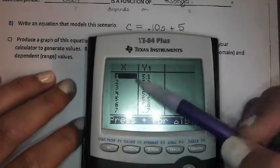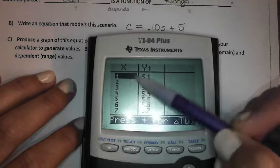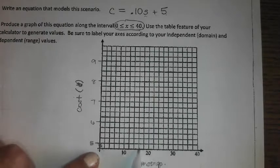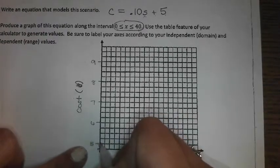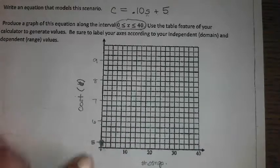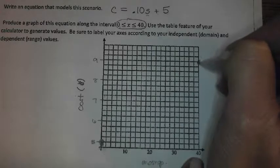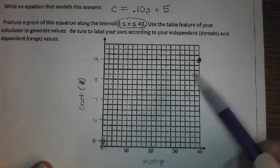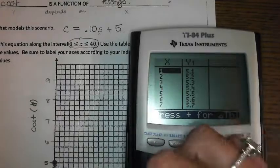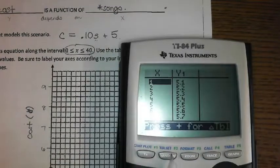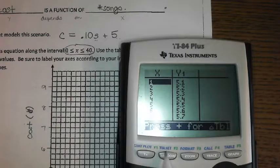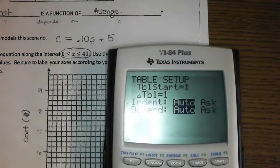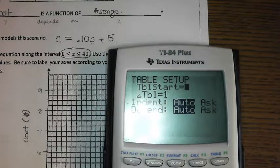Now my table is starting at one and counting up by ones. I don't want every individual point in between there. Nor do I feel like scrolling to the 10 and then to the 20. So on your calculator above the window button, you also have this table set feature. Hit second table set, and we can change some things about how our table shows us.